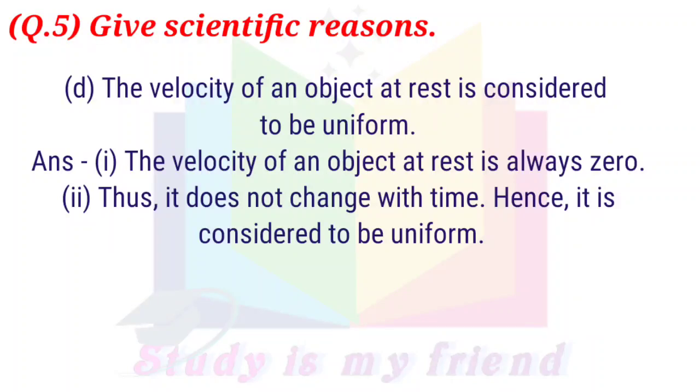D. The velocity of an object at rest is uniform. Answer: The velocity of an object at rest is always zero. Thus, it does not change with time. Hence, it is considered to be uniform.